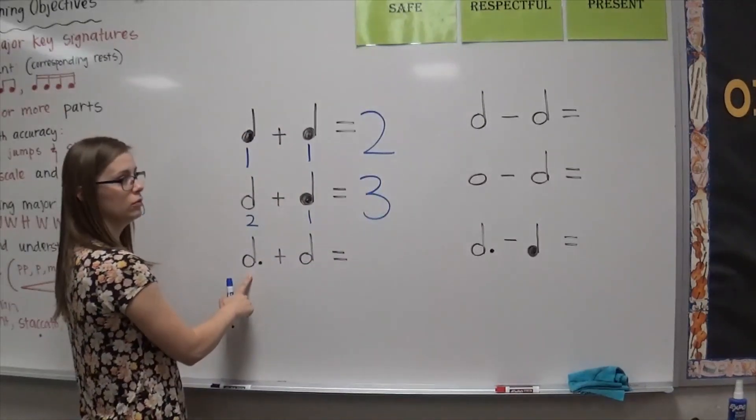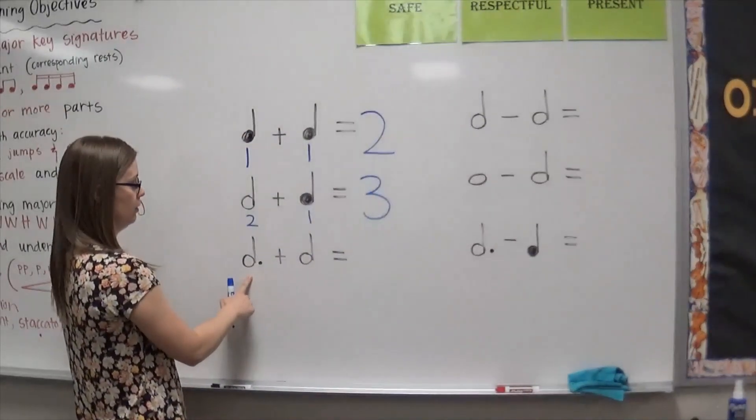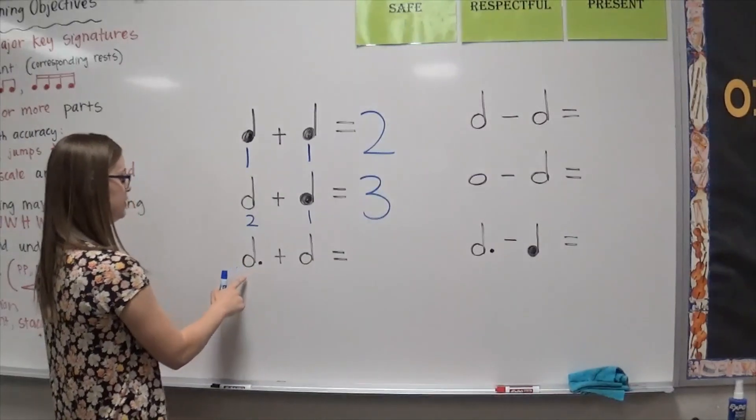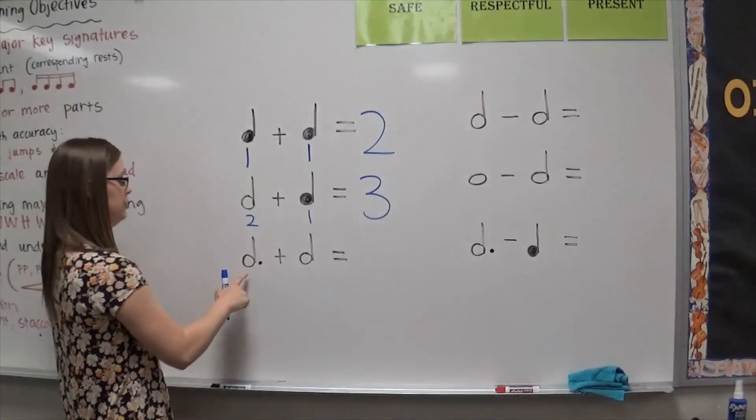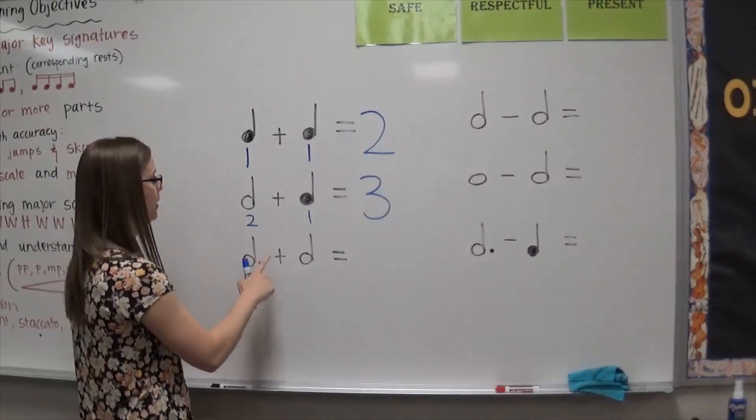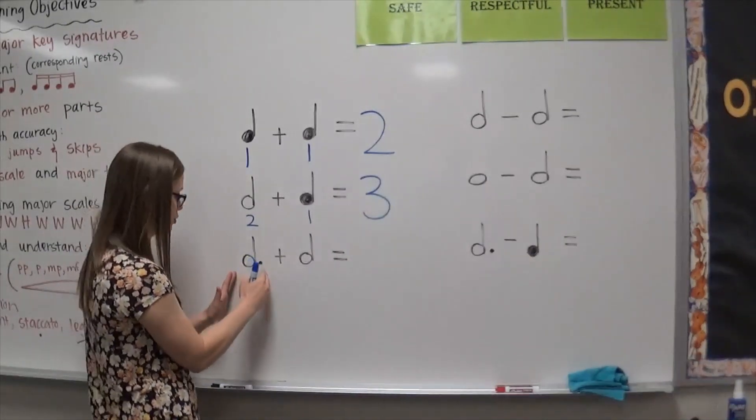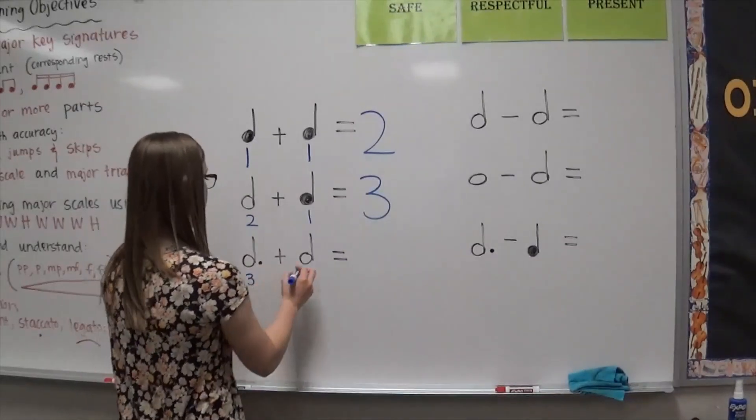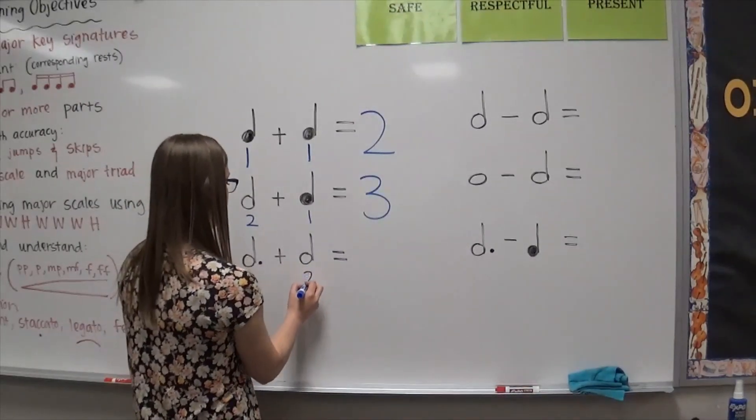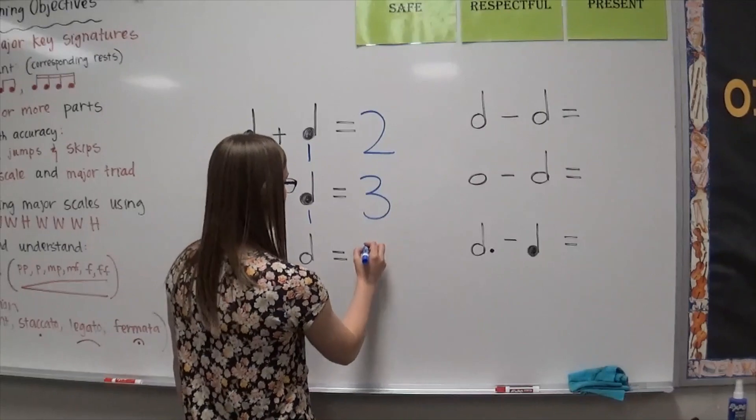Dotted half note? Two plus one, three. Good, three beats, and I'm glad you did that math in your head too. You remember a half note is two beats, and then we add half of whatever that is with the dot, which is one. Two plus one is three. So three plus, we know that a half note is two. Three plus two? Five.